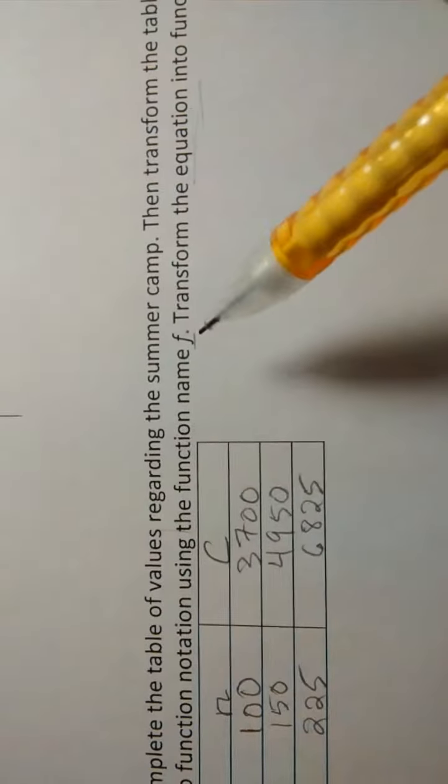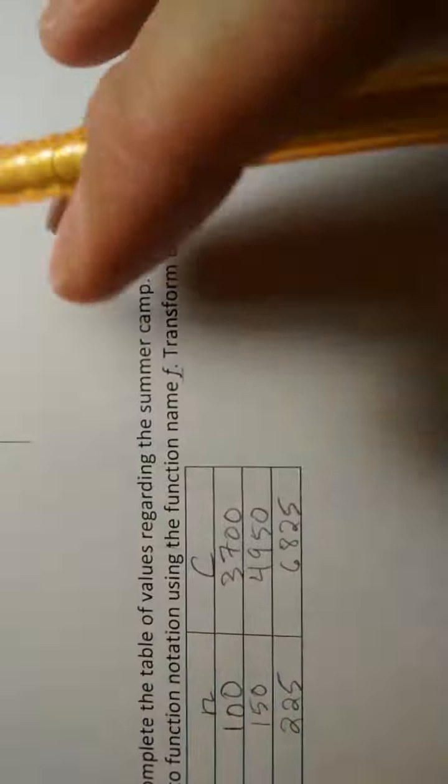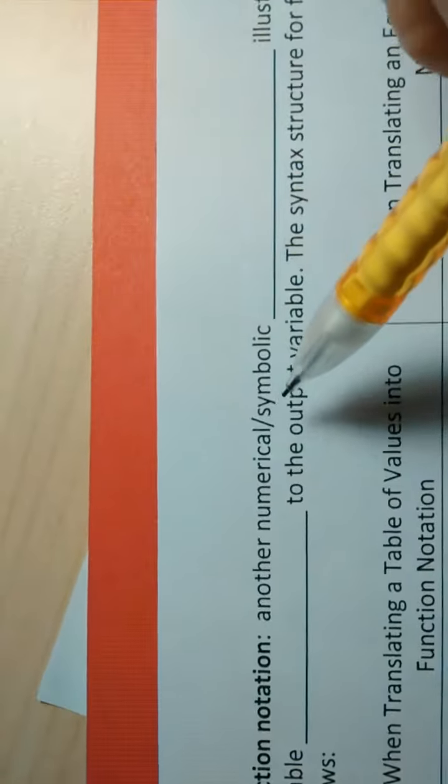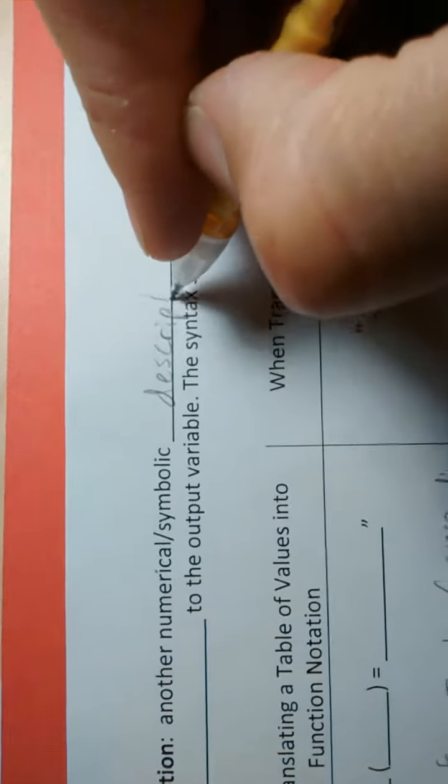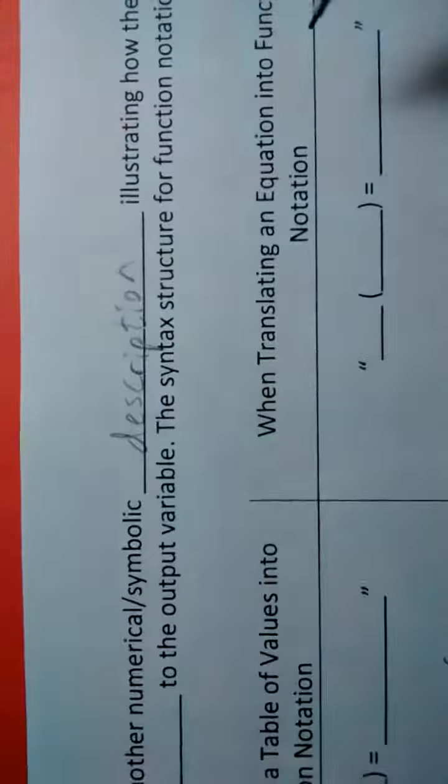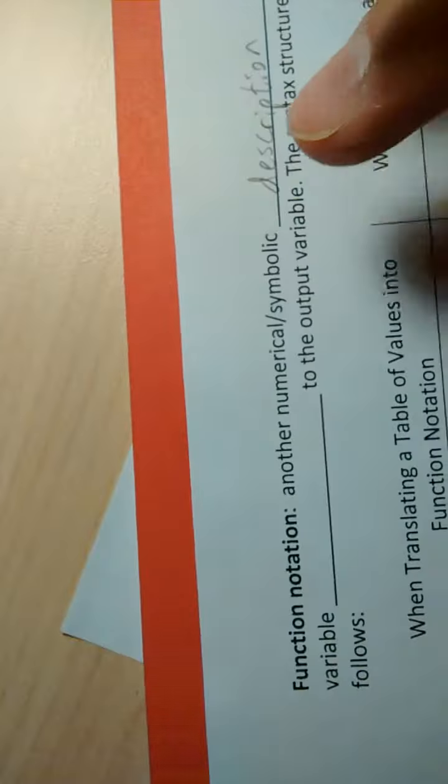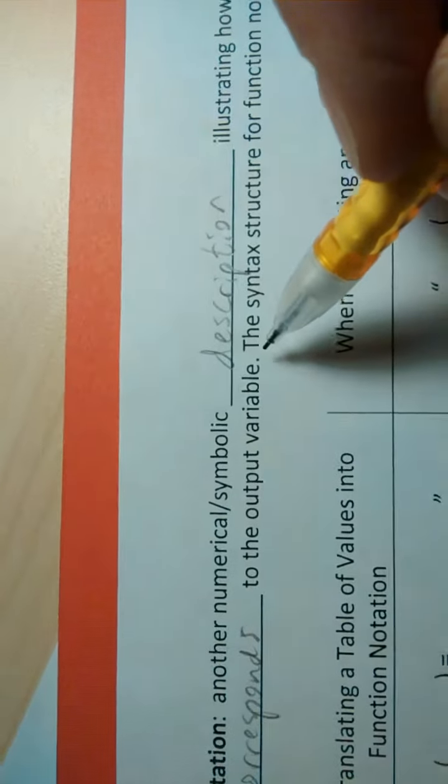Now, what's this business of function notation? So let me give you the definition here up top. It says, function notation is another numerical symbolic description. It's a symbolic or a numerical description illustrating how the input variable corresponds to the output variable.